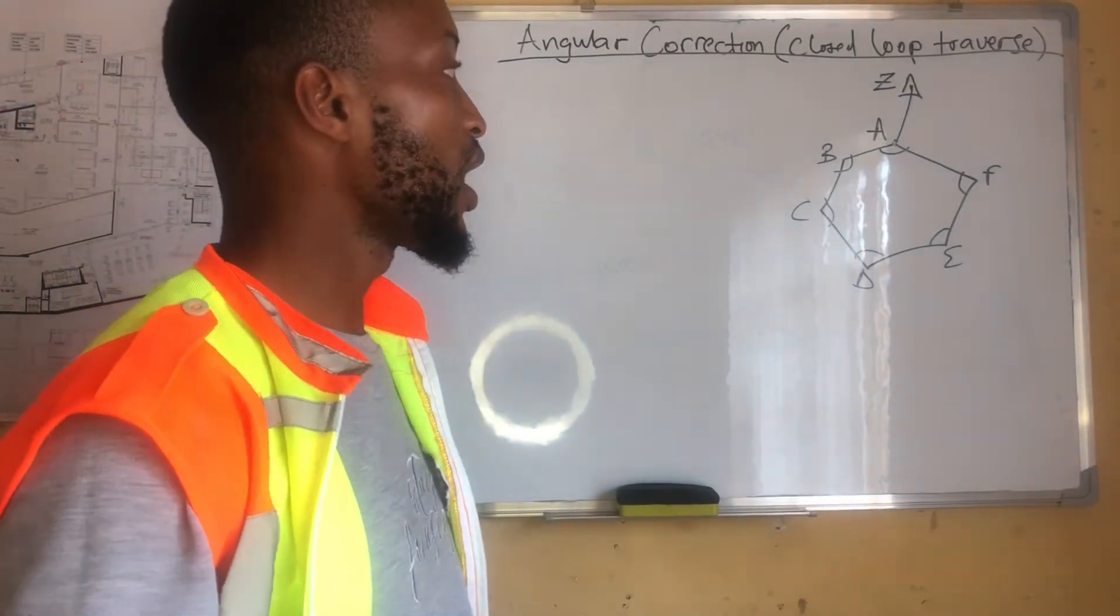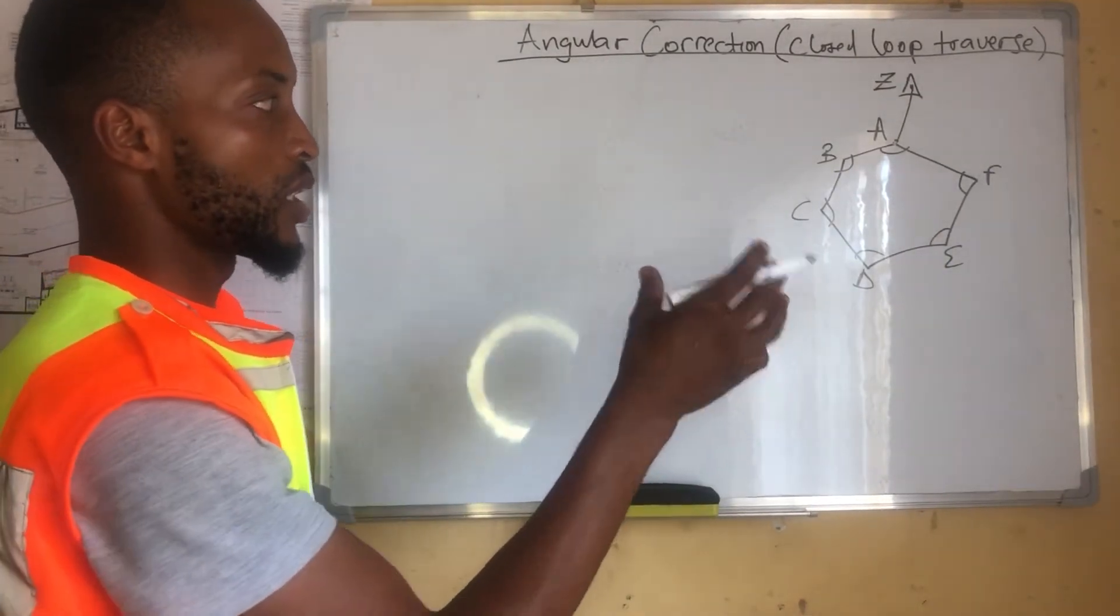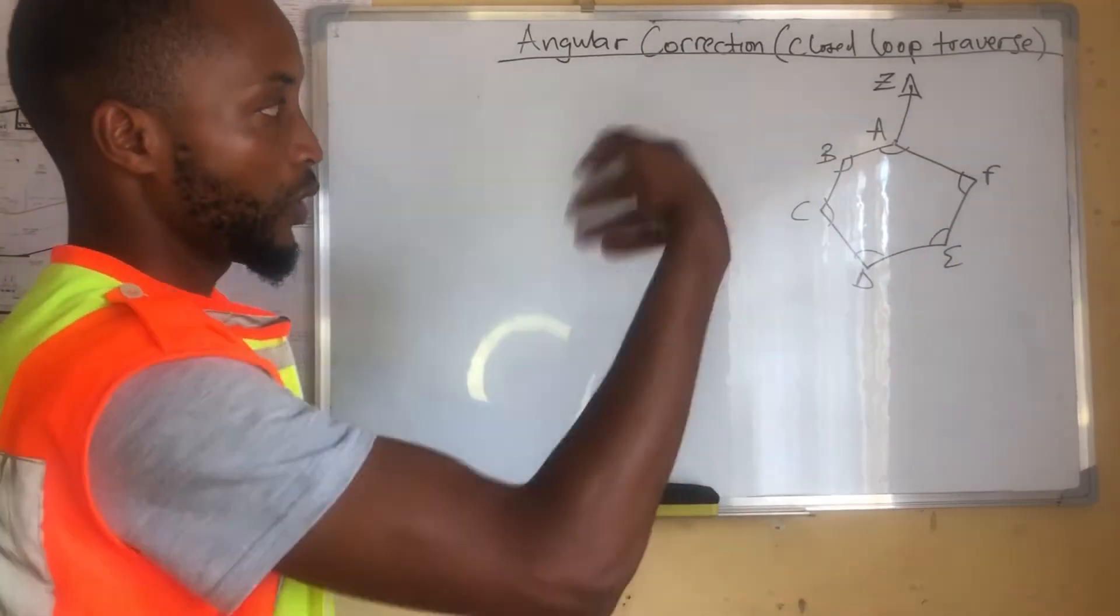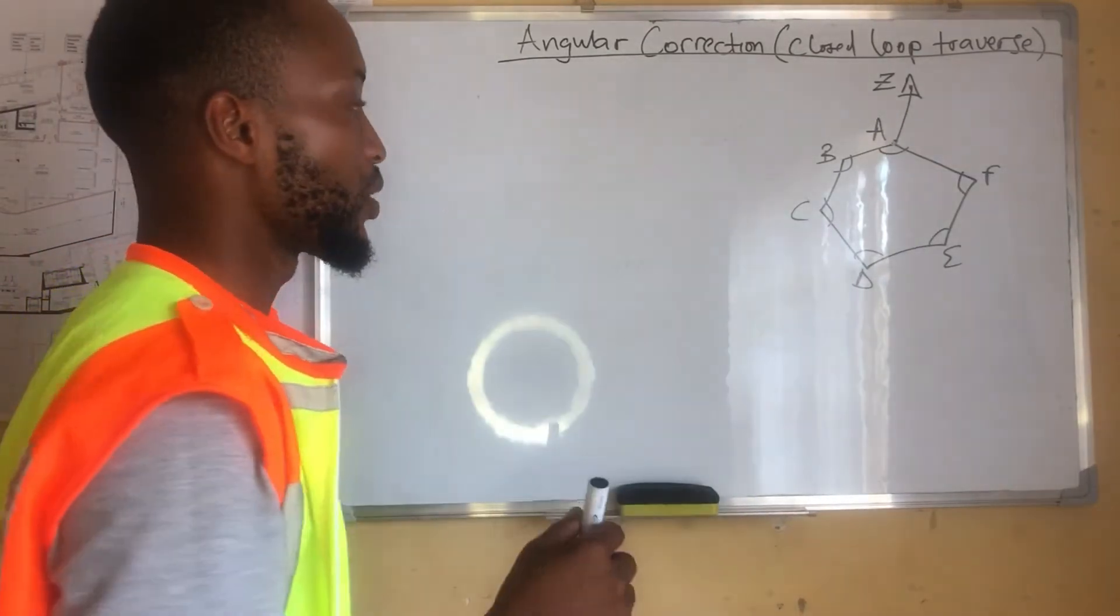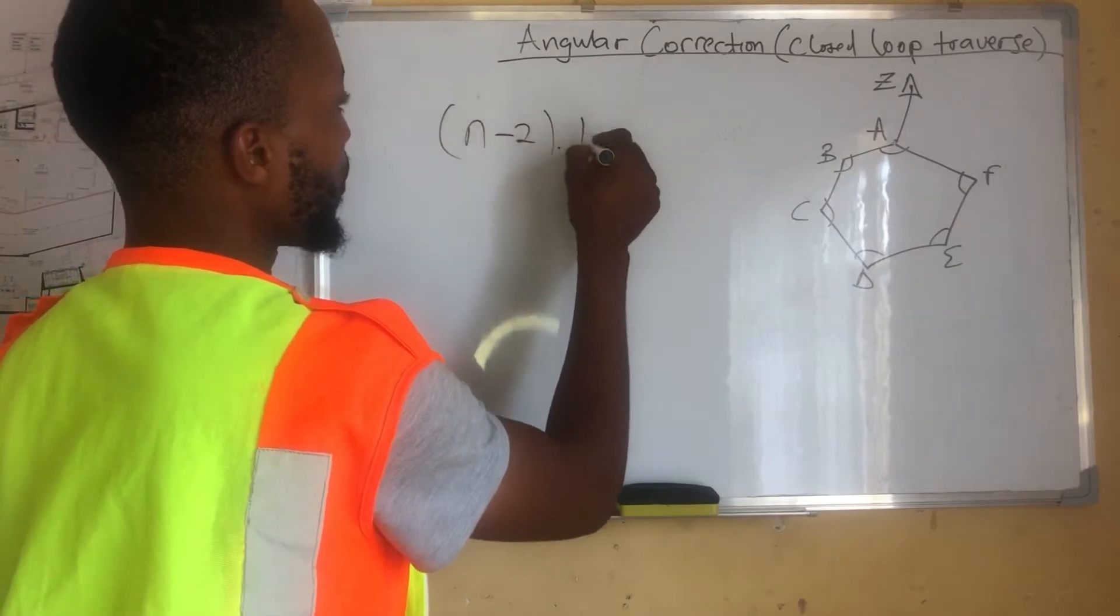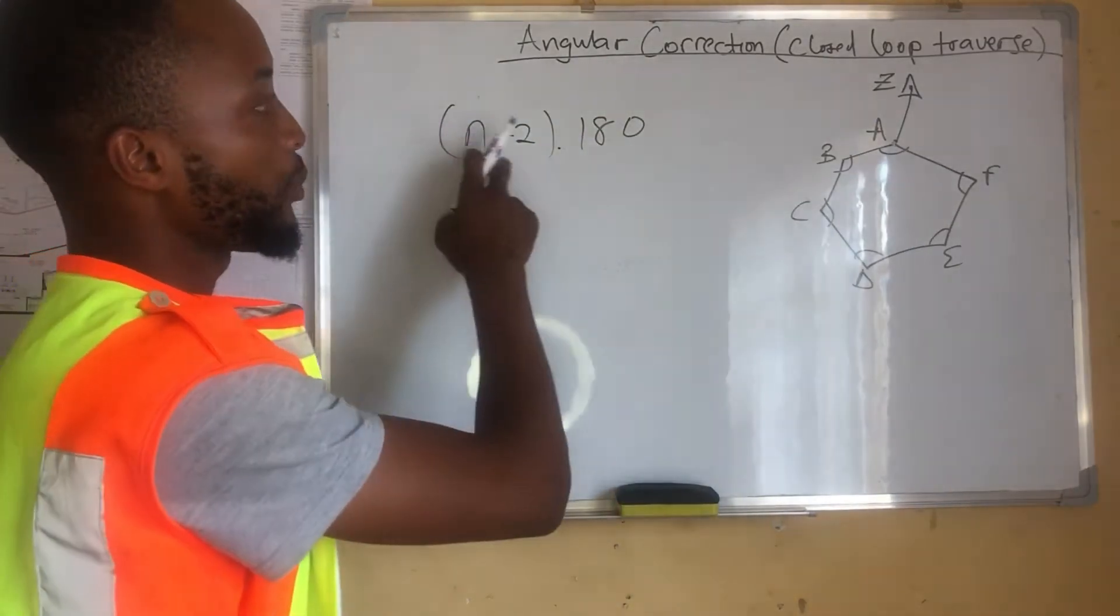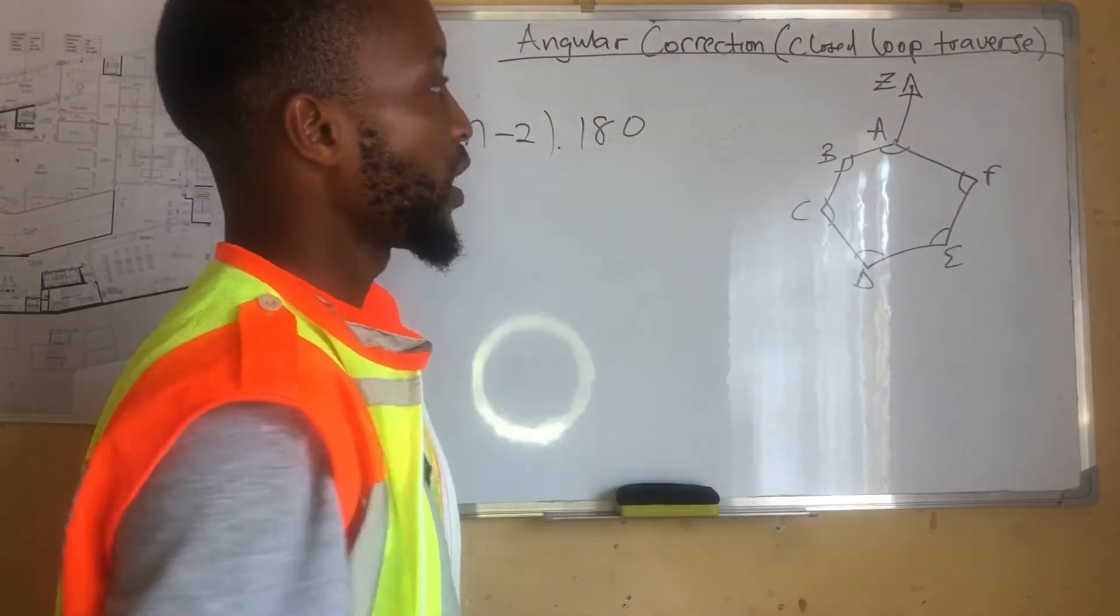For the interior angles, if we were asked to get the summation of the whole polygon, the angle summation for the whole polygon, we say n-2 multiplied by 180. If we were given the exterior angles, we would say n plus 2 multiplied by 180.